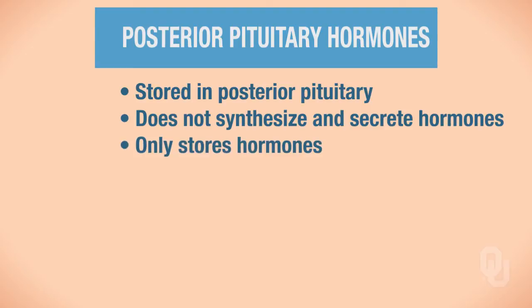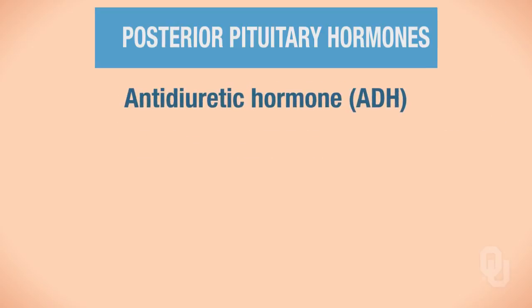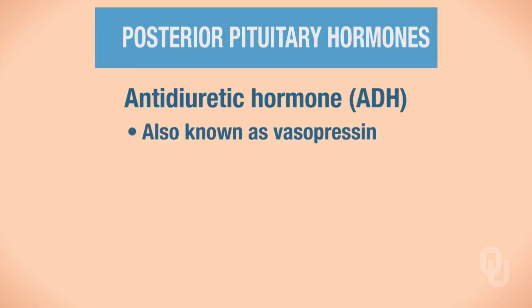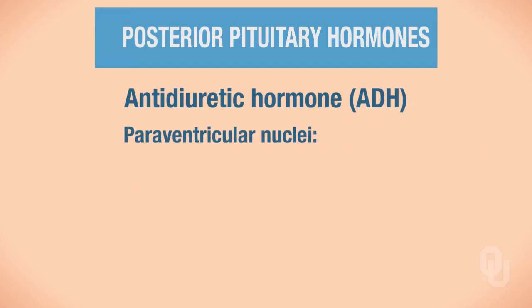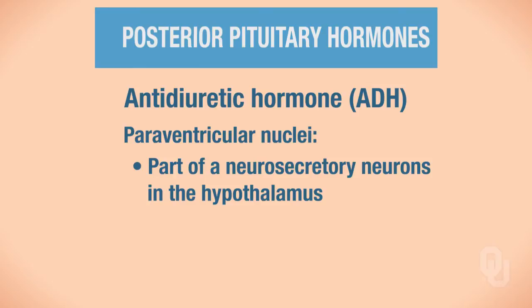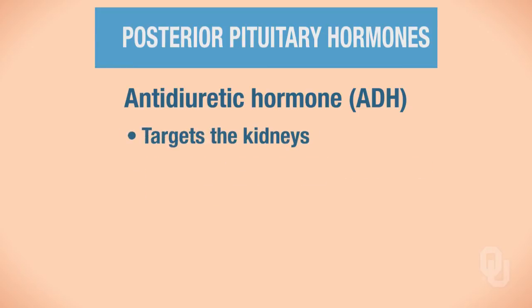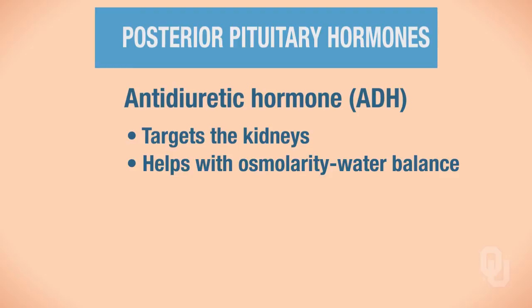The first hormone associated with the posterior pituitary is antidiuretic hormone, ADH, which is also known as vasopressin. Vasopressin or ADH is produced primarily by the paraventricular nuclei of the hypothalamus. The paraventricular nuclei are part of a neurosecretory neuron located in the hypothalamus — that nucleus is found within that neurosecretory cell. ADH targets the kidneys, and its function is to help with osmolarity and to maintain water balance within the body.